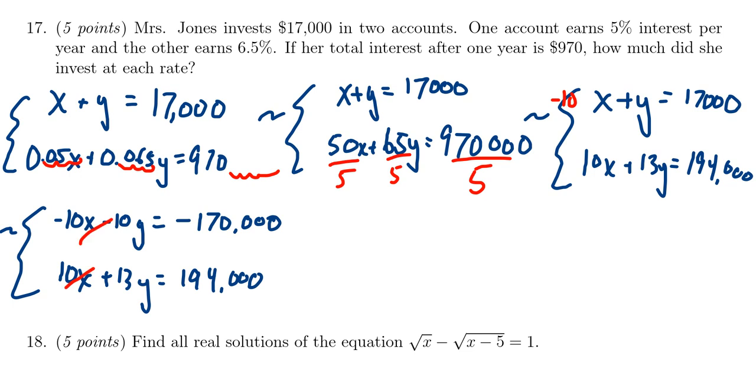Then you're left with the Ys. 13Y take away 10Y will be 3Y. And if you have 194,000 take away 170,000, you'll be left with 24,000 there. Divide both sides by 3, and you end up with Y equals $8,000.